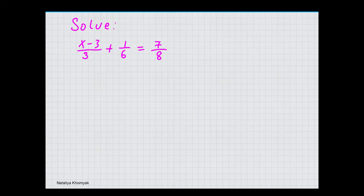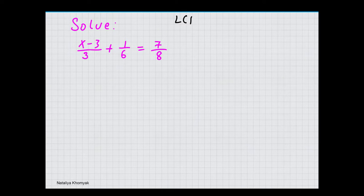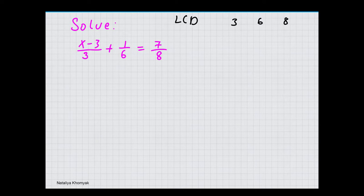When you have an equal sign, you can do the same thing to both sides. What I am going to do is multiply each term by the least common denominator of 3, 6, and 8. I am going to use the box method to find that number.